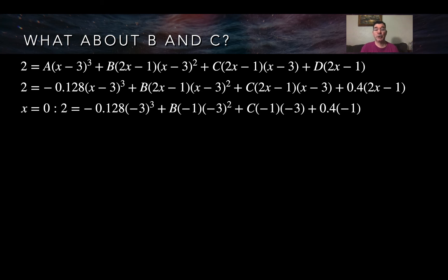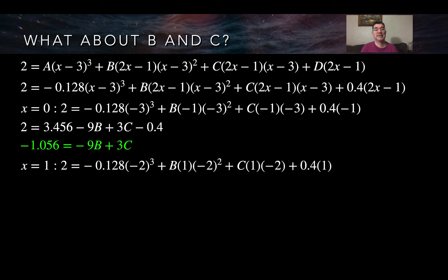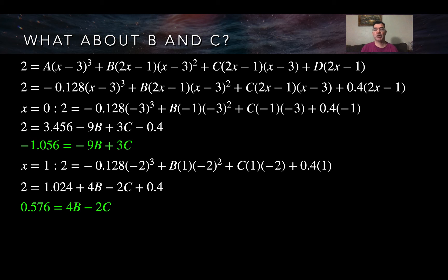Now I pick arbitrary values of x. I plug in x equals 0 — none of the terms go away, and I get an expression with B and C. I rearrange so B and C are on one side with a constant on the other. Then I plug in x equals 1 and do the same, getting a second equation. Those two equations form a system.